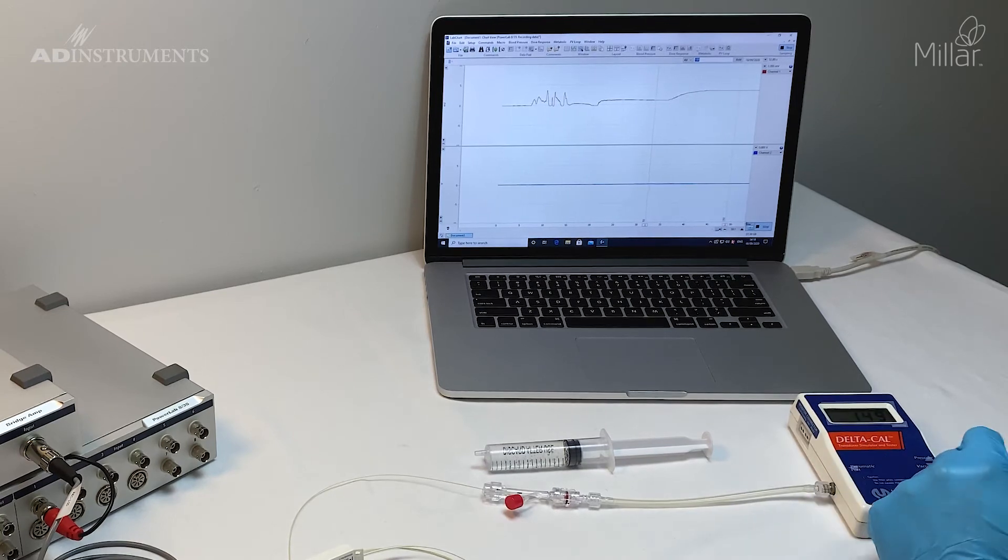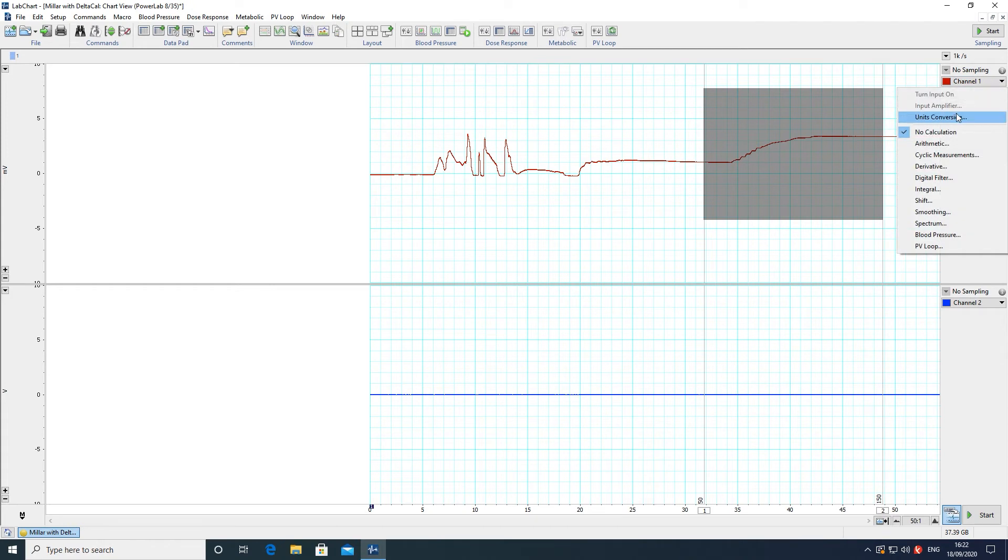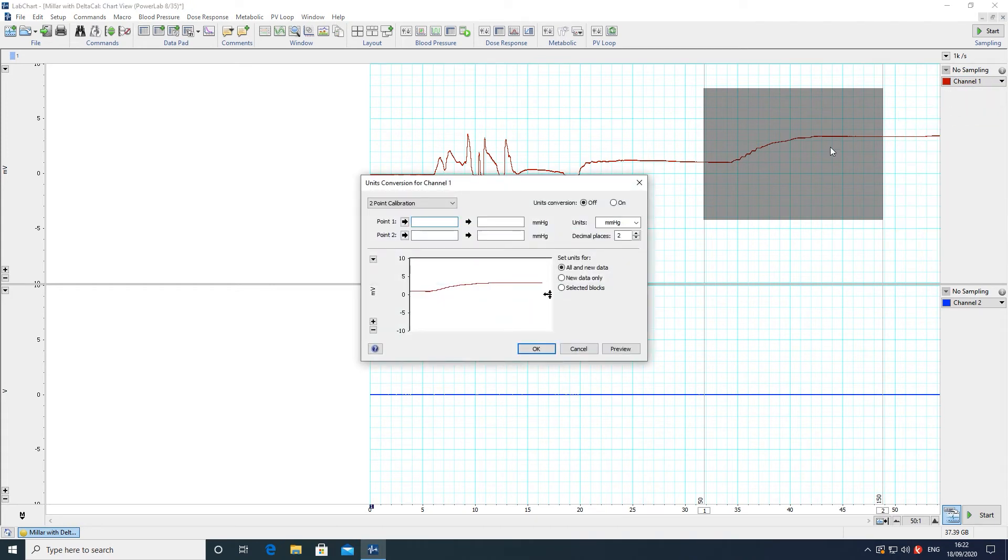Once done, I can stop recording and calibrate for those two levels. I'll make a selection between the two comments, click on units conversion, and select the first part which was 50.